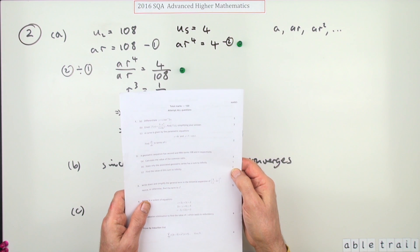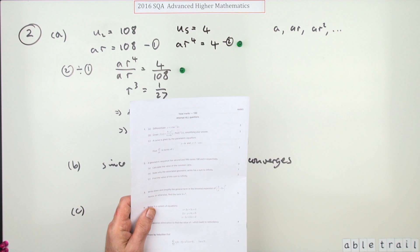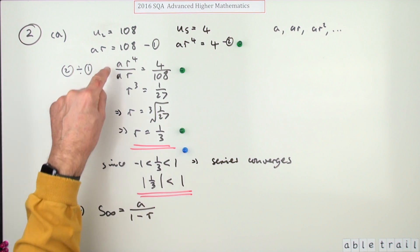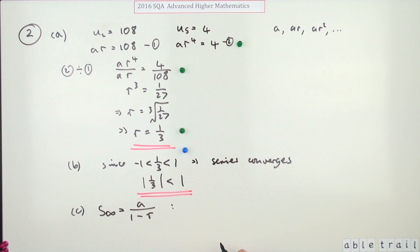And the last part for two marks. So what's this sum to infinity? Now here we can just go straight in with that formula. The sum to infinity is A upon one minus R. Only thing is, what's A? I know what R is, that's a third, so one minus R is two thirds. But what's A? We'll have to work that out separately. Get it from here though.